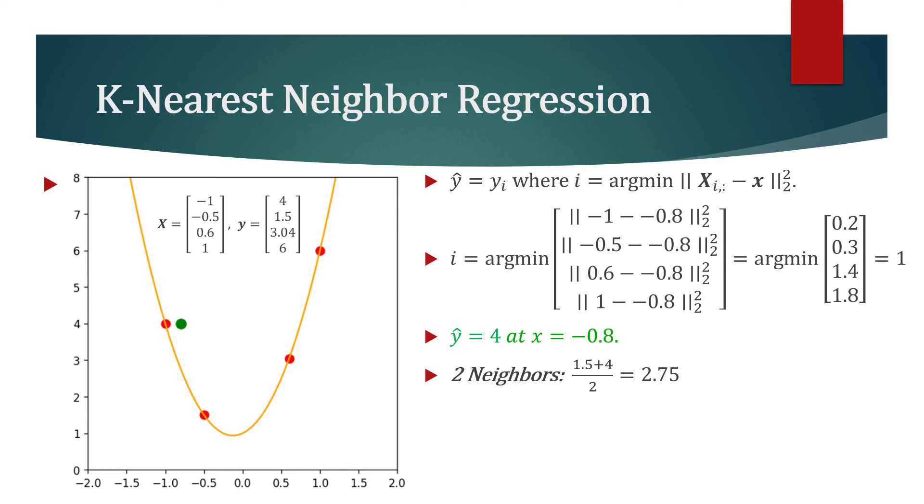From our calculation of the closest neighbor, we see that the second closest neighbor is the second element of this training data, for which the regression target is 1.5. If we take the average regression target of those two neighbors, we obtain 2.75.